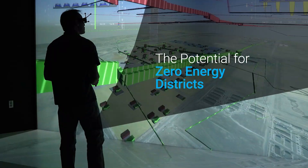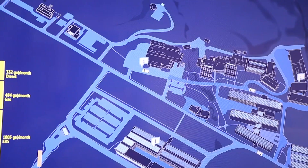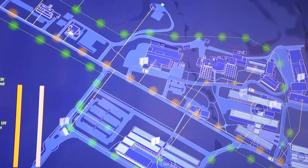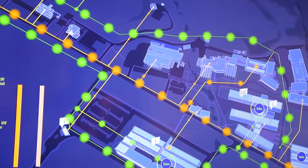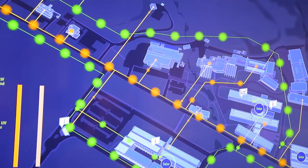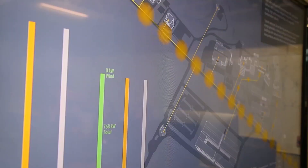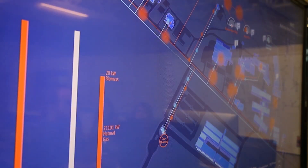A Zero Energy District or Zero Energy Community is when all of the individual buildings within that district or community are working together — they're communicating — so that the energy performance for the entire community is optimized.